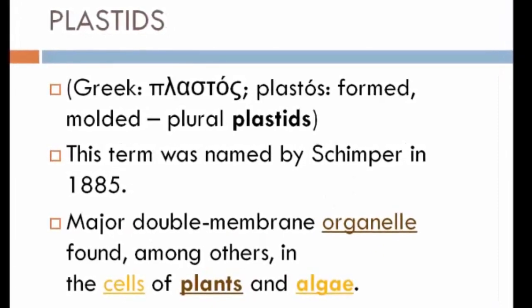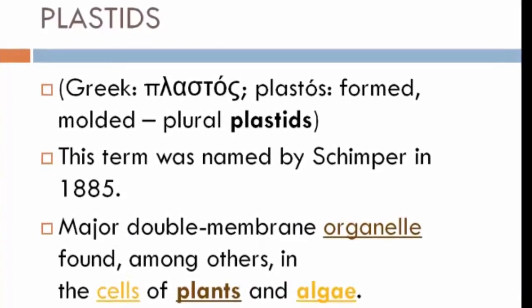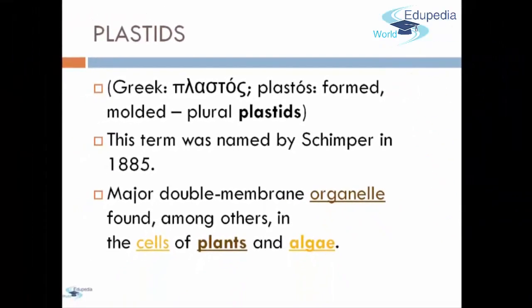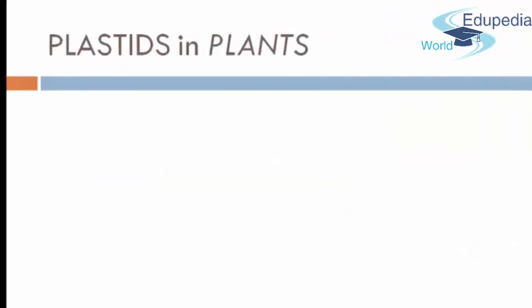Plastids is a major double membrane organ found, among others, in the cells of plants and algae. Again, Plastids are usually found in the cells of plants and algae.